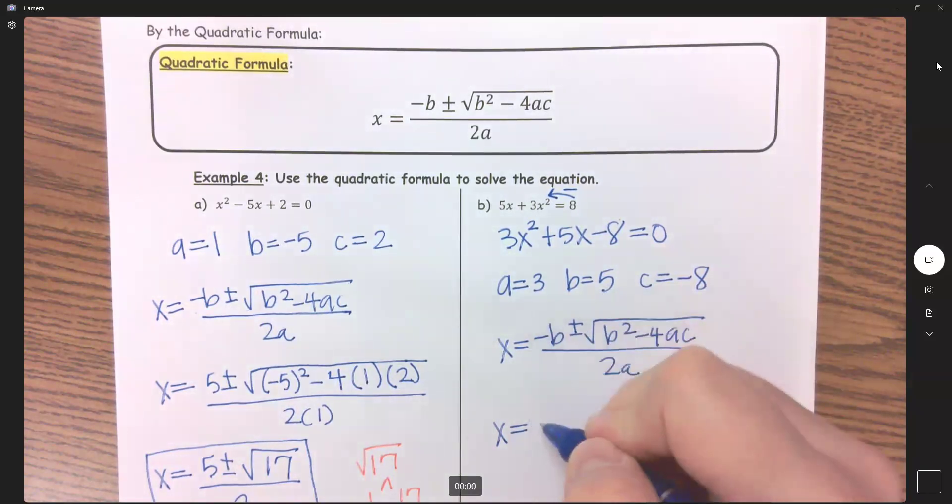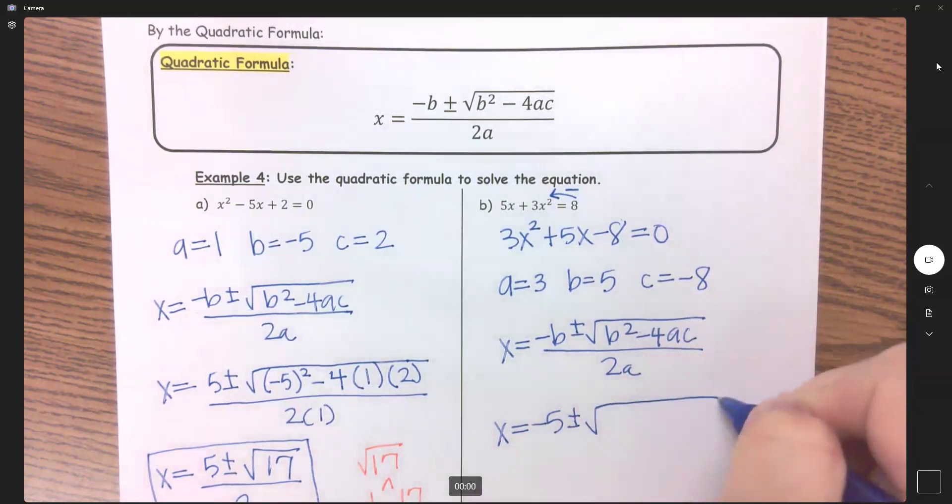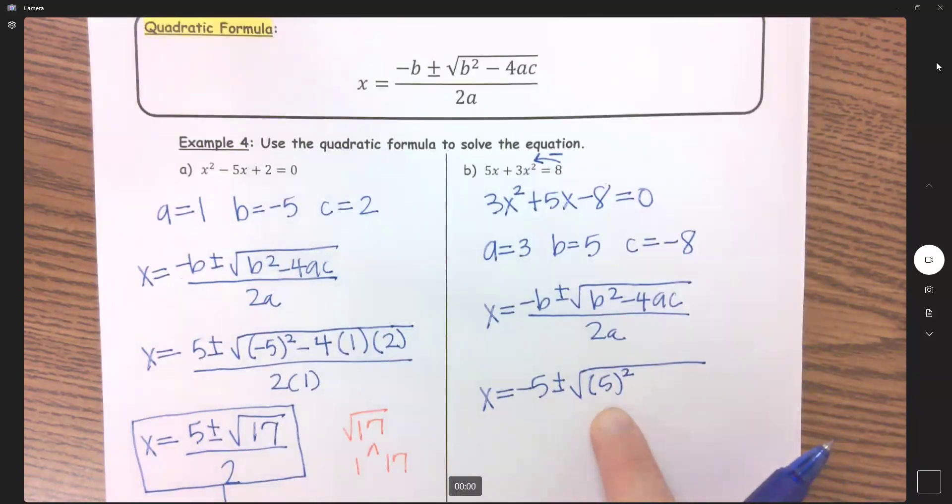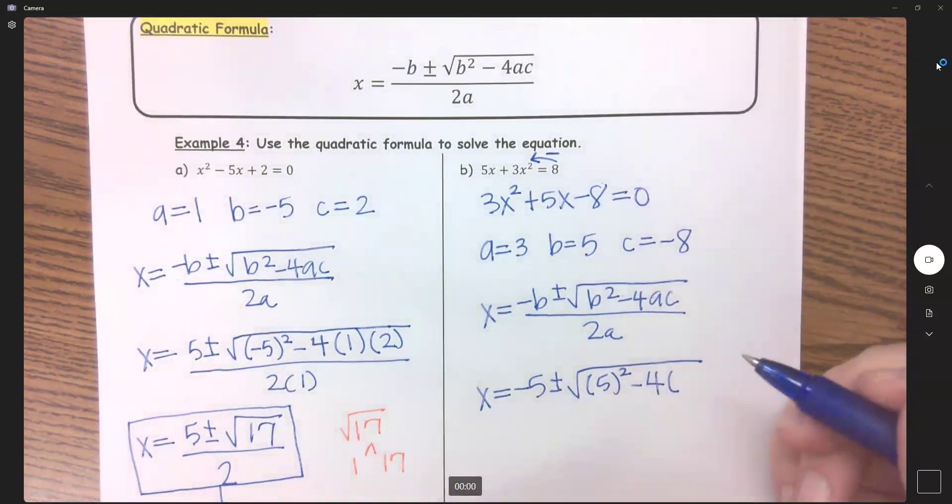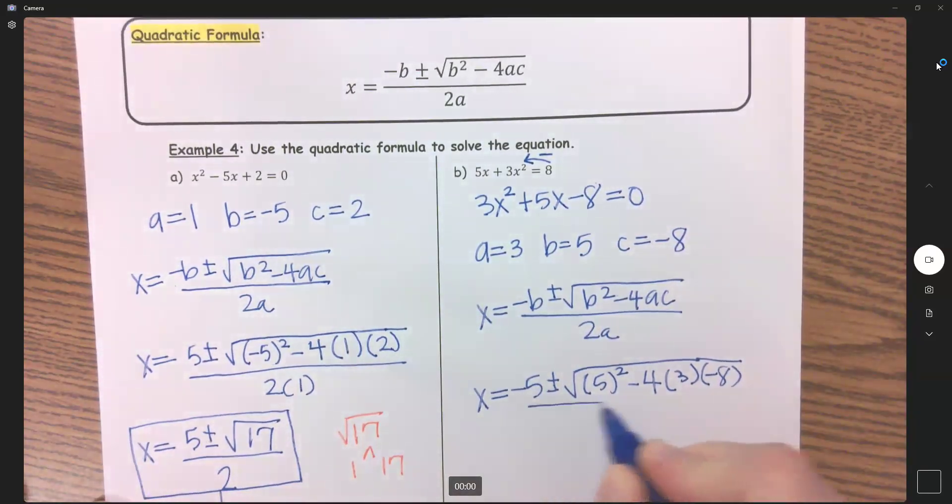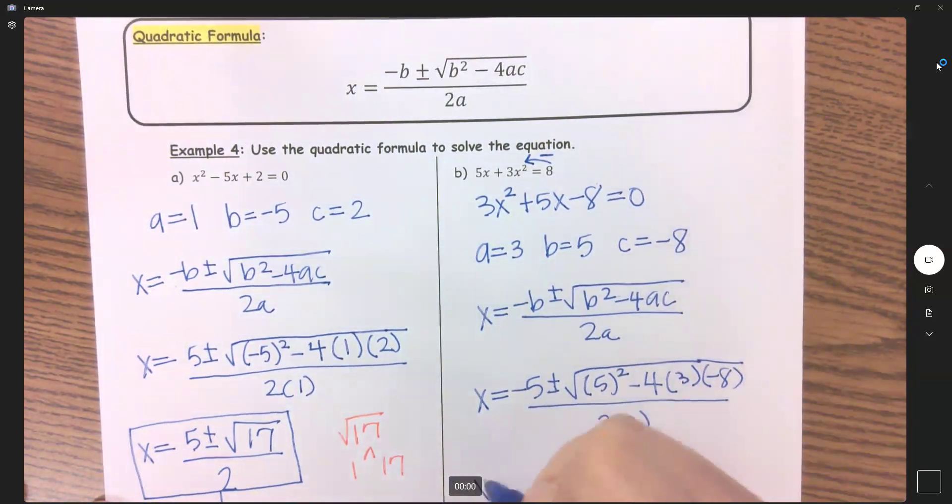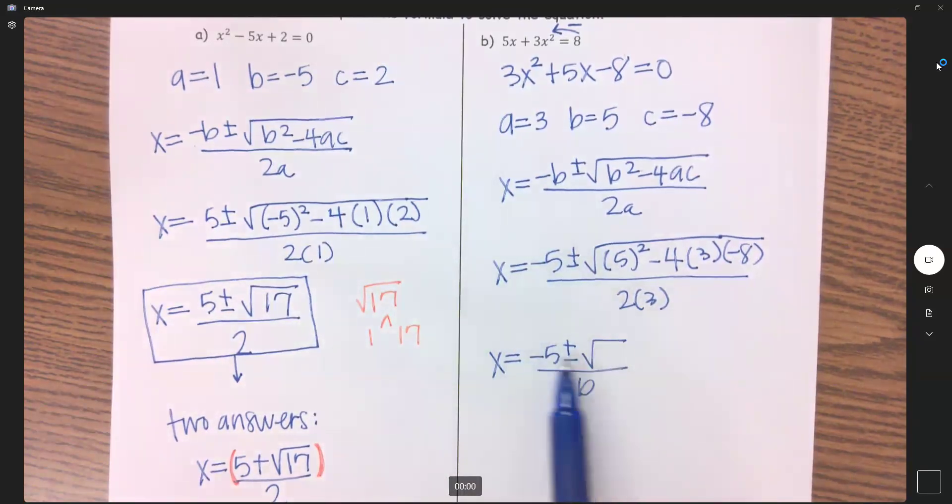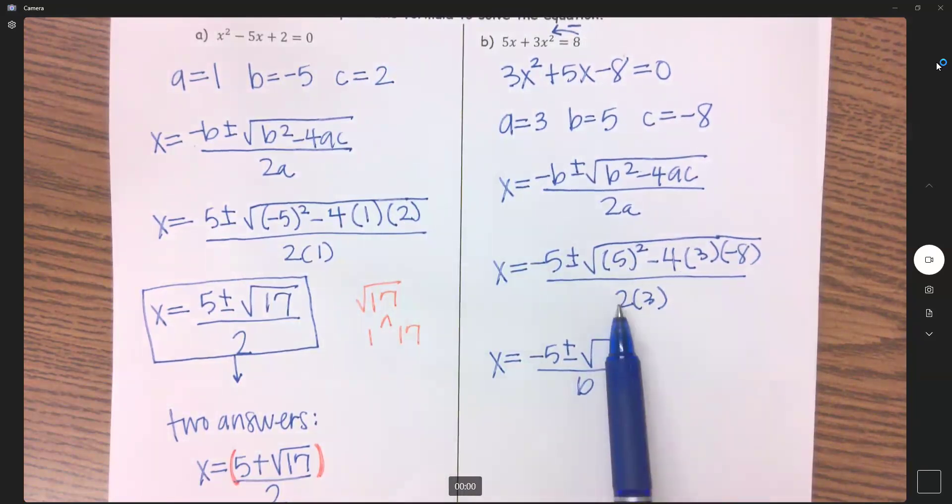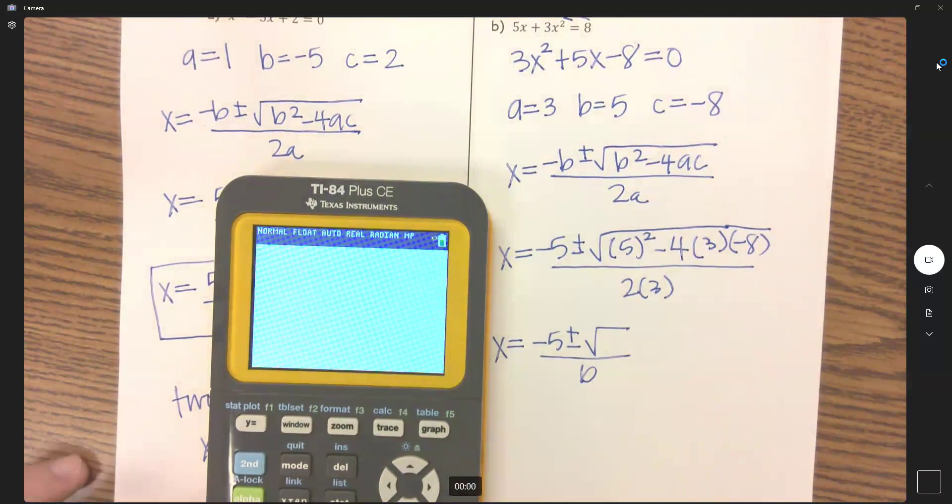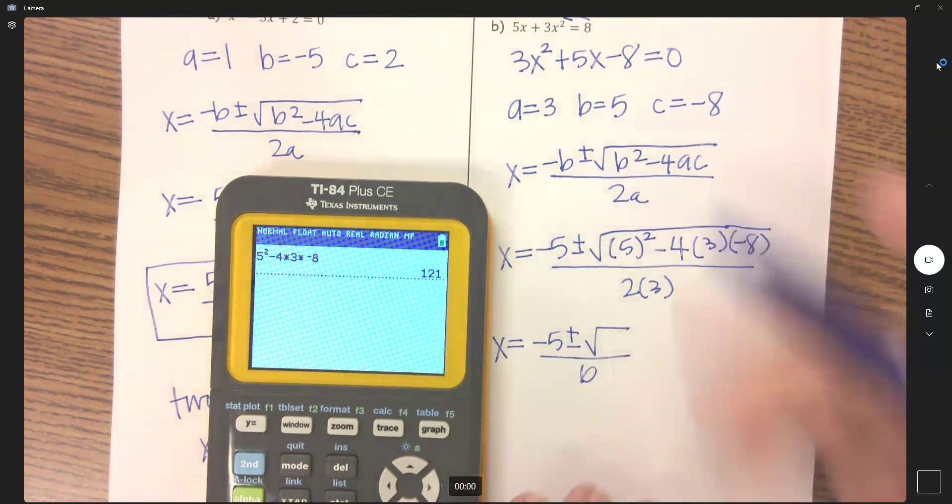Negative b, my b is positive. We have negative 5 plus or minus the square root of b squared. So I'm going to go ahead and put that in parentheses, but this does not really matter if it's in parentheses or not. It matters when that b is negative. But just do it every time and you don't have to worry about when do I do it and when do I not. Times 4 or minus 4 times a of 3 times c of negative 8 all over 2 times 3. So cleaning it up, I've got negative 5 plus or minus, and I'm going to have the square root. We need to figure out what goes under it, and then 2 times 3 gives me 6. So what goes under my radical here? So we have 5 squared minus 4 times 3 times negative 8. Let me get 121.